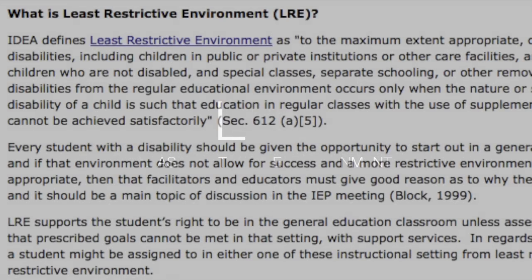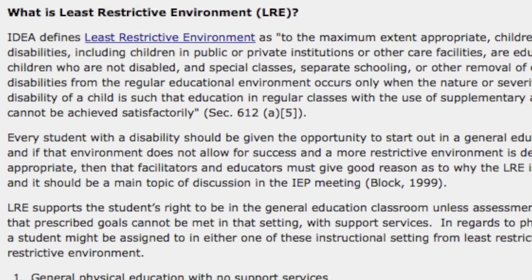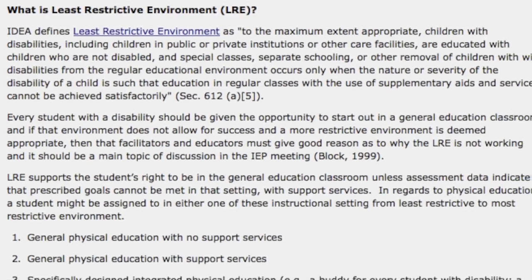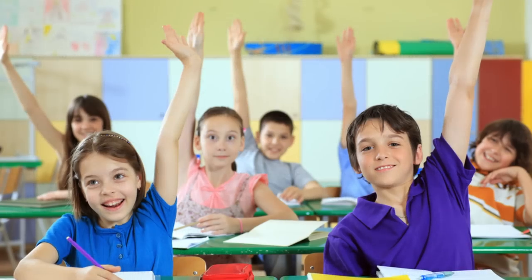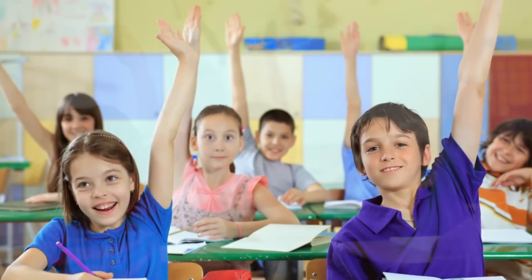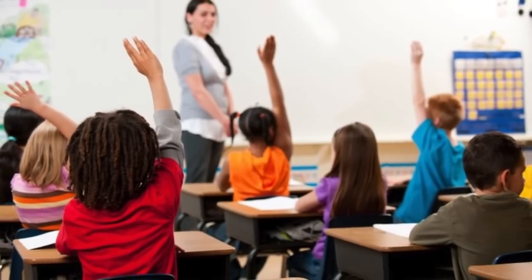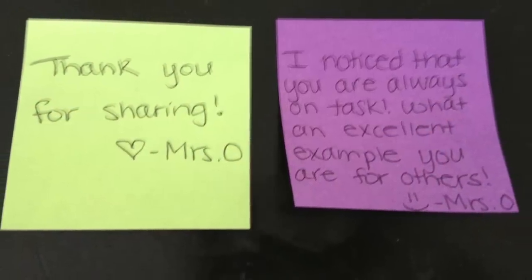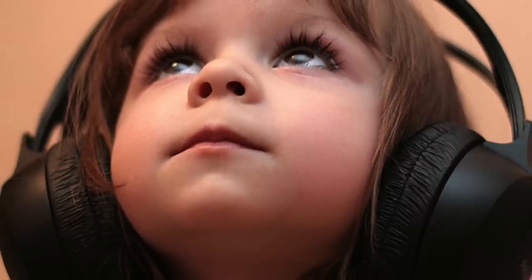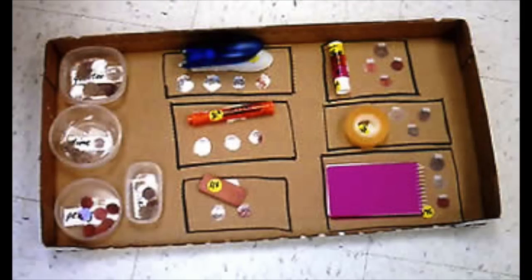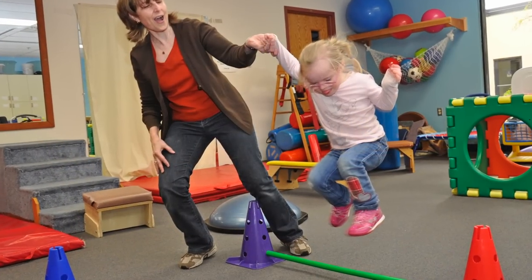LRE means that students with disabilities must have the opportunity to be educated with non-disabled peers to the maximum extent appropriate. The IEP team first has to consider that the student will be educated in the regular education classroom with full accommodations — such as putting sticky notes on the child's desk as reminders or creating audio tapes for tests — modifications such as changing the difficulty of assignments, and supports such as physical therapy or a one-on-one aide for the student.